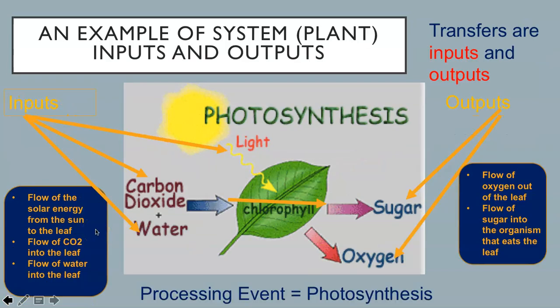In this system of a plant as a system, we can also view the transfers as inputs and outputs. Energy and matter flow as inputs and outputs to a system. In this photosynthesis example, solar energy, carbon dioxide, and water are all inputs to the system when they enter the plant while sugar and oxygen are outputs when they leave the plant. The processing event within the plant is photosynthesis. Can you see how the inputs are processed into some outputs?